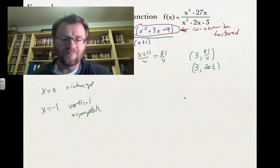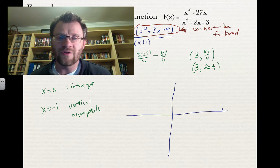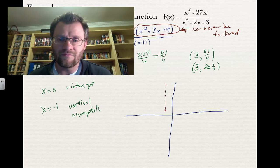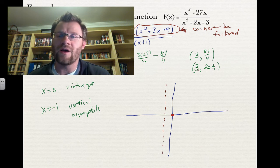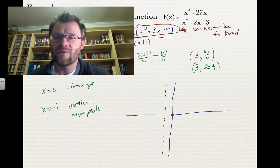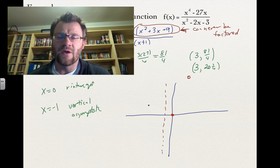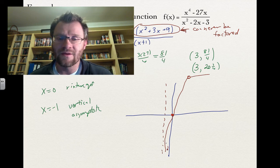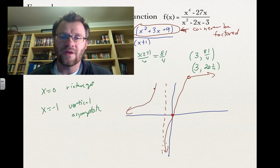So if we're going to draw a sketch of this, and it will be a very crude sketch, we know there's a vertical asymptote at x equals negative 1. We know there's an x-intercept at x equals 0. And there's a hole at 3, 20 and a quarter. So 3 over and 20 and a quarter is somewhere up here. Your function could look like anything, probably a bit like a rational function. We'll go into this with more detail later in the course.